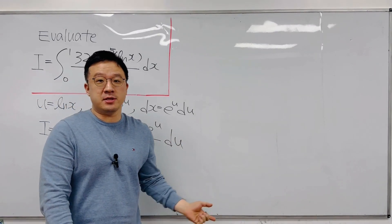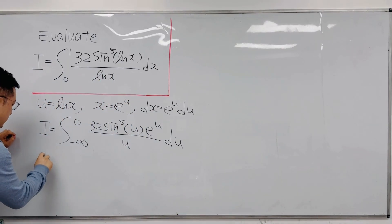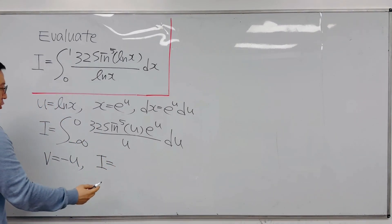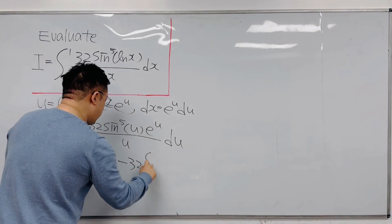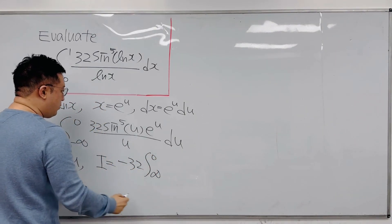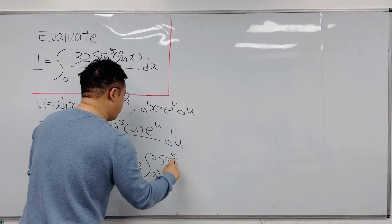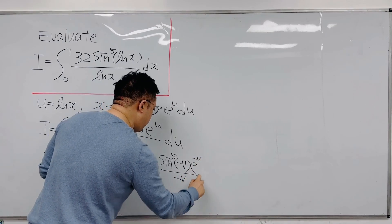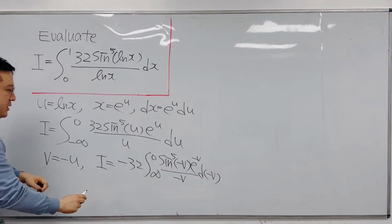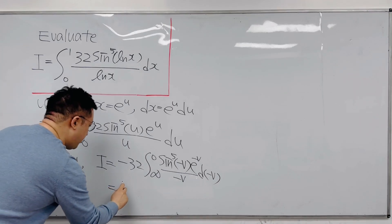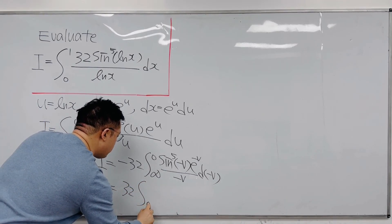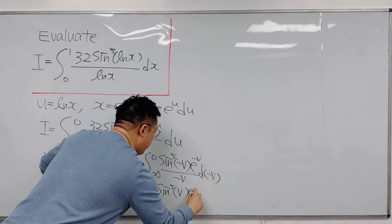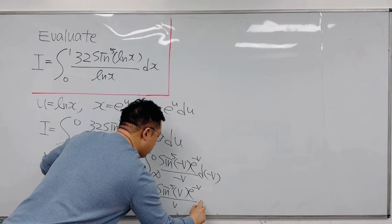Let's use another substitution — the v-substitution. Let v = negative u. Then we can rewrite integral I as: pulling the 32 out, we get negative 32 times the integral from positive infinity to 0 of sine to the power of 5 of negative v, times e to the power of negative v, over negative v, d of negative v. This simplifies to positive 32 times the integral from 0 to infinity of sine to the power of 5 of v, times e to the power of negative v, over v, dv.